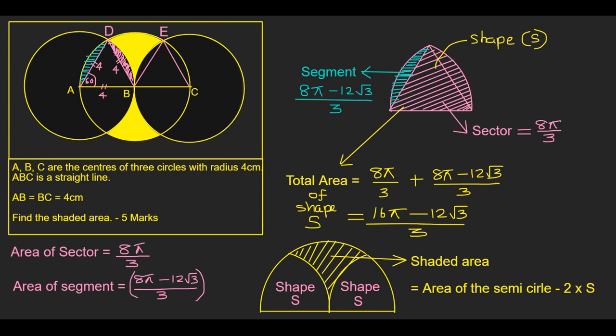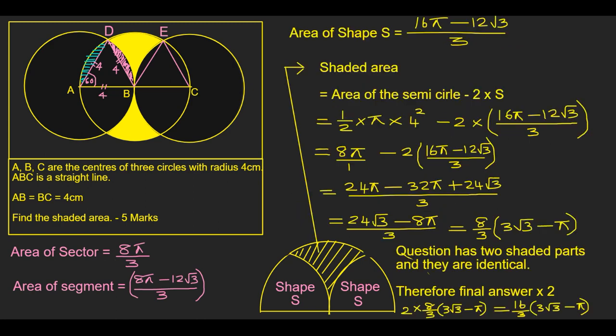Now we're going to divide this entire question into half. The semicircle on the top, find one shaded area, then we can times it by two. In the top half of the circle, shape S has two portions, and in between there is a shaded area in yellow stripes. That is the question. So the shaded area equals area of the semicircle take away two times S. Area of the shape S is 16 pi minus 12 root 3 over 3. Then the shaded area is area of the semicircle minus 2 times S: half times pi times 4 squared minus 2 times 16 pi minus 12 root 3 over 3.